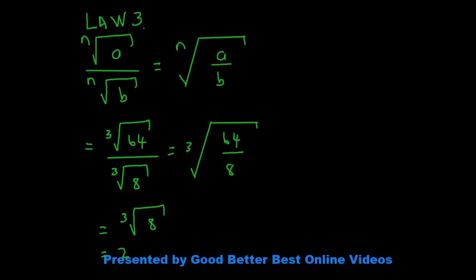Law 3 says when I have the nth root of a divided by the nth root of b, it's the same thing as the nth root of a divided by b. So when I have the cube root of 64 divided by the cube root of 8, I can say it's the same thing as the cube root of 64 divided by 8, which is 8, and the cube root of 8 is 2.